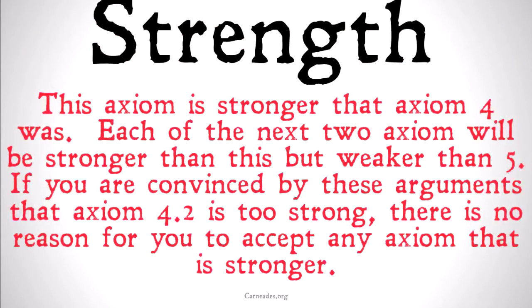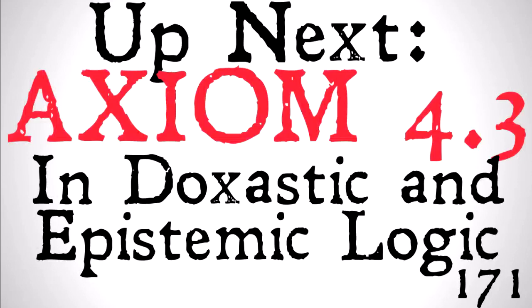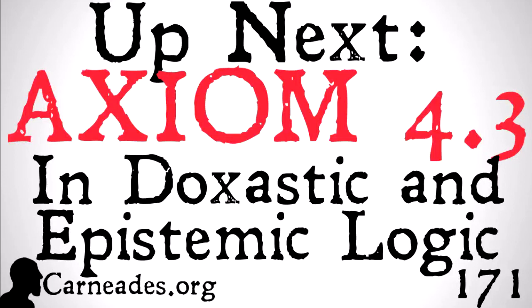This axiom is stronger than axiom 4 was, but each of the next two axioms will be stronger than this but weaker than 5. So if you're convinced by these arguments that axiom 4.2 is too strong, there is no reason for you to accept any axiom that is stronger — so either 4.3 or 4.4 — since 4.3 and 4.4 are going to imply all of these axioms that are weaker than they are. Up next we are going to be looking at axiom 4.3 in doxastic and epistemic logic. Watch this video and more here at carneades.org, and stay skeptical everybody.